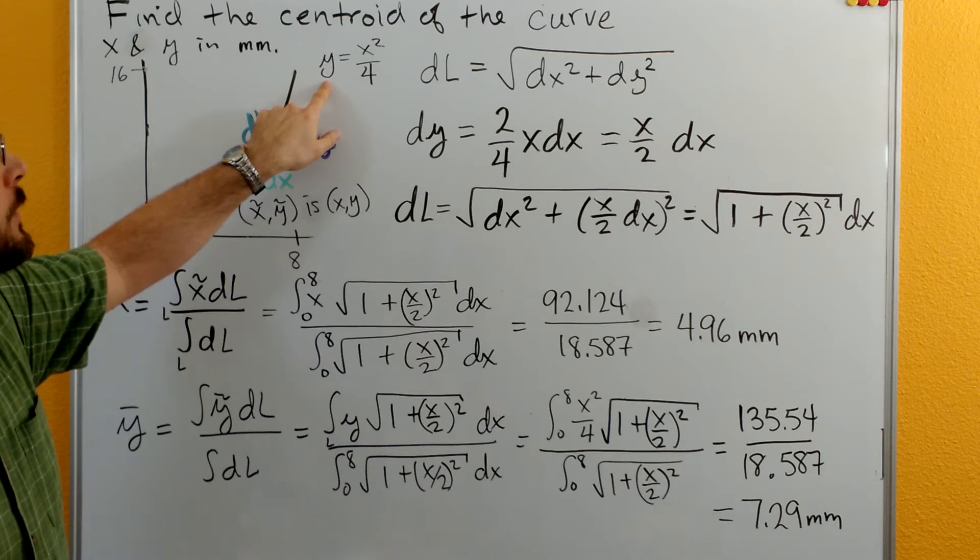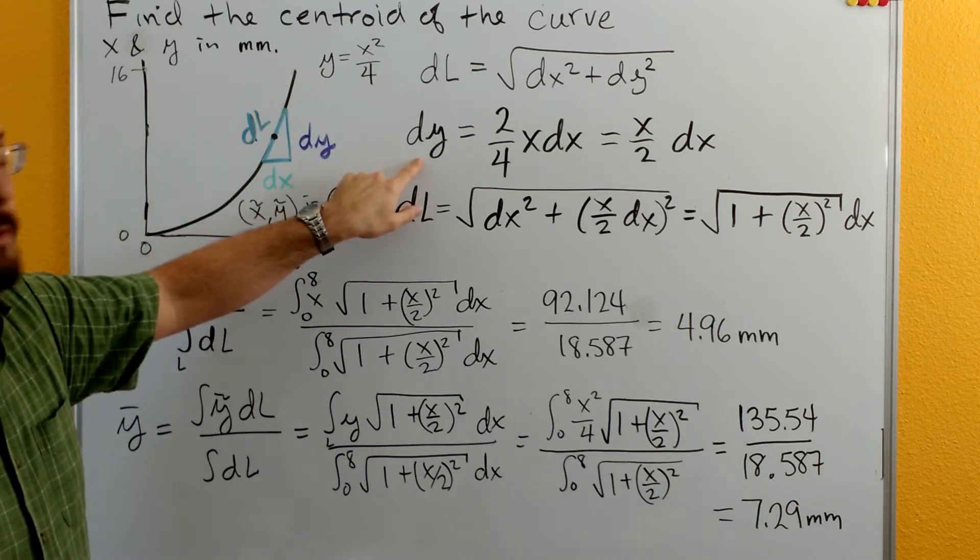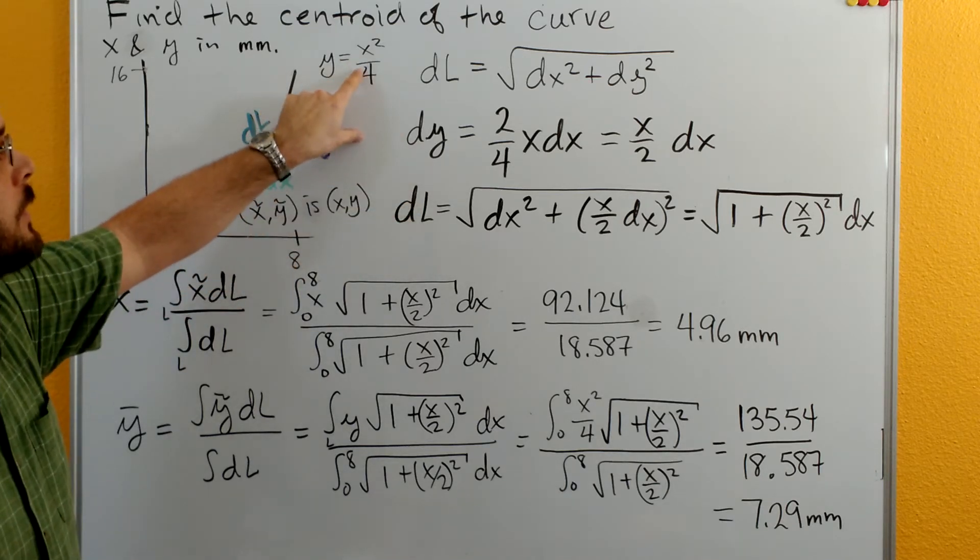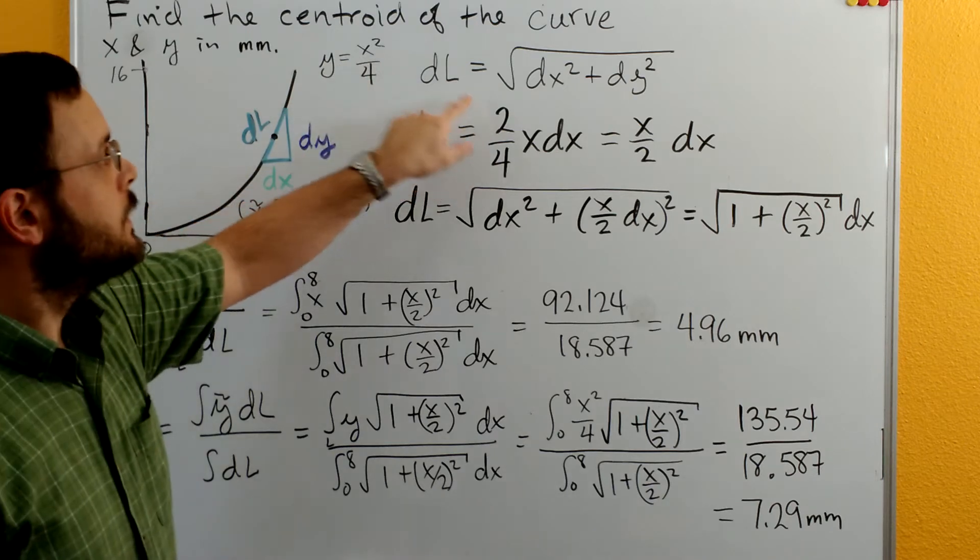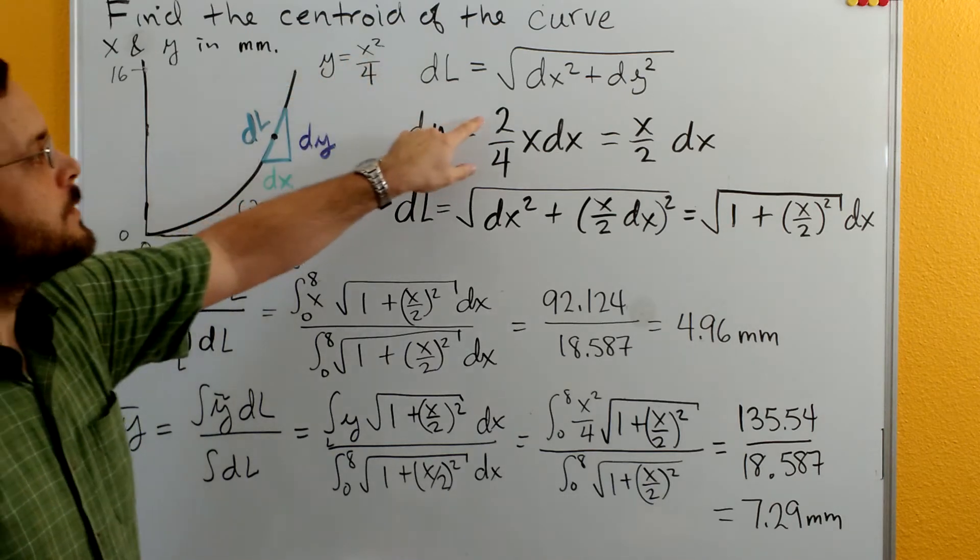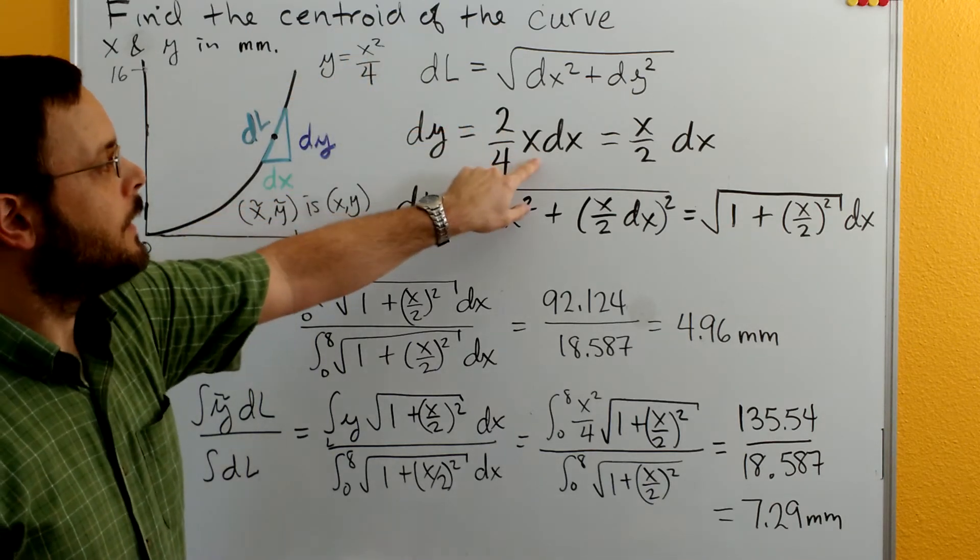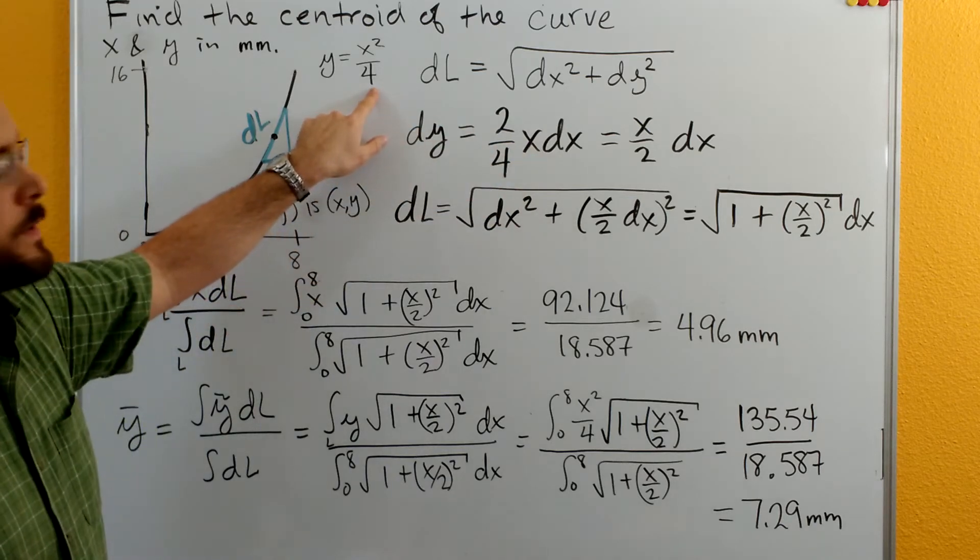The differential of y is dy and then the differential of x squared would be 2x. We've got the 4 still here.